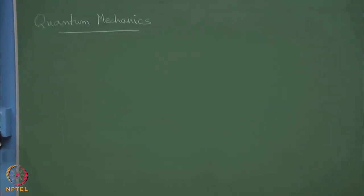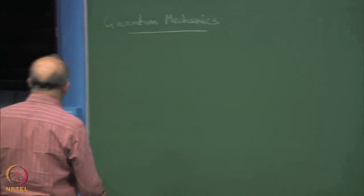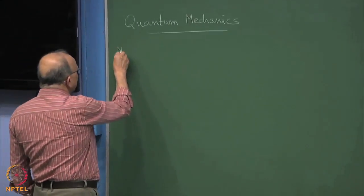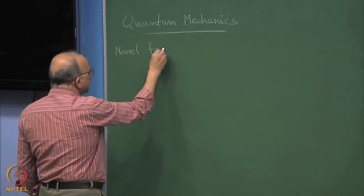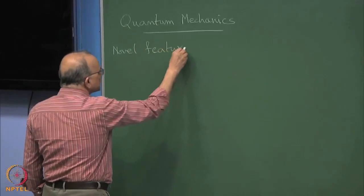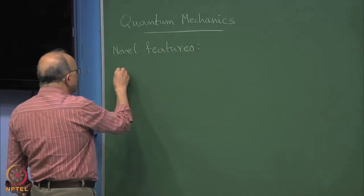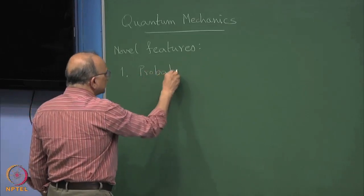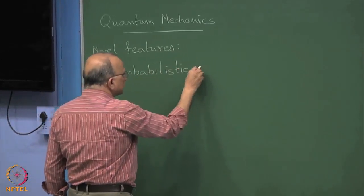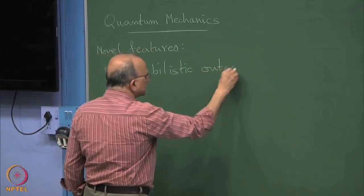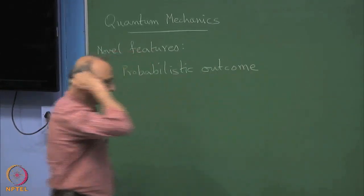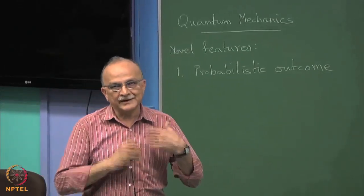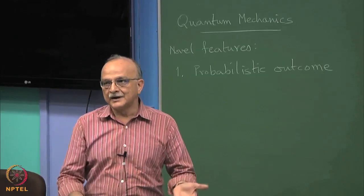It looks like lots of formulae, but effectively what it boils down to the following. The first novel feature is probabilistic outcomes. Even if you have identically prepared systems, or if you repeat the exact same experiment, the outcomes can be different.